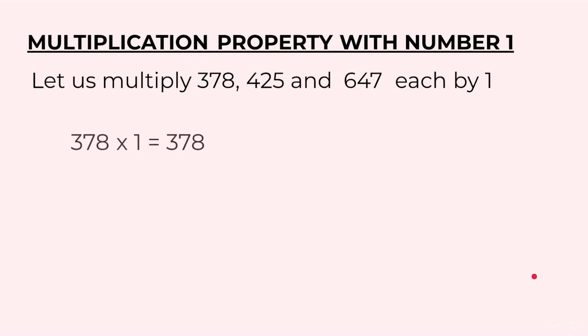When we multiply 378 by 1, we get 378. When we multiply 425 by 1, we get 425. When we multiply 647 by 1, we get 647.